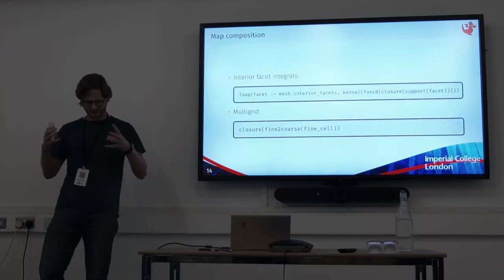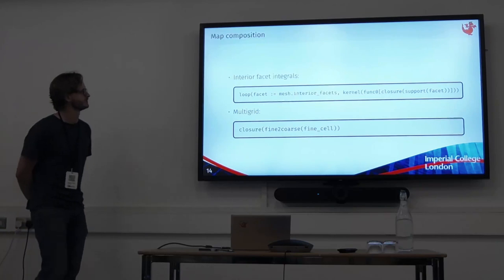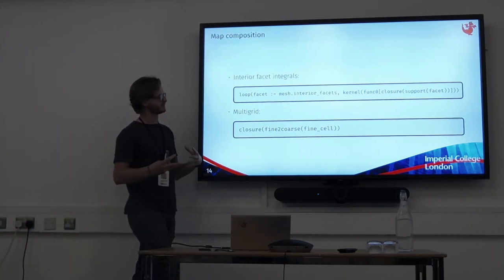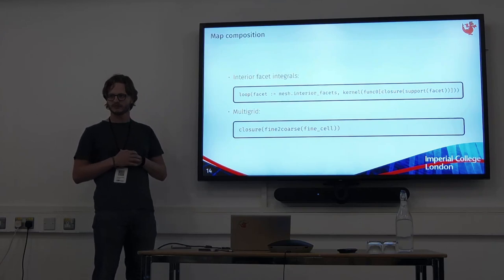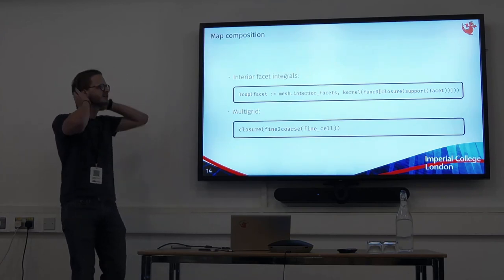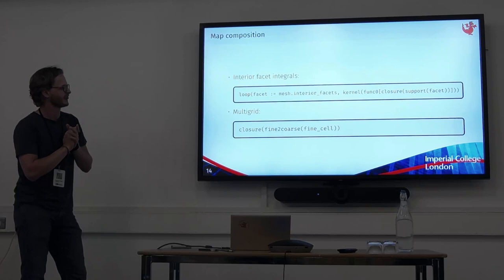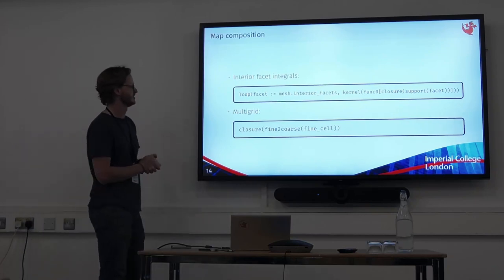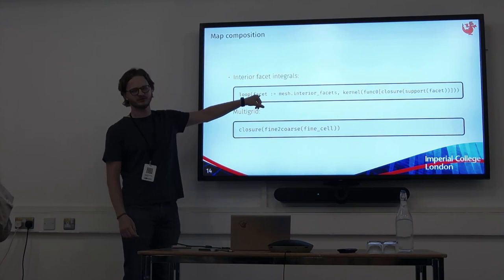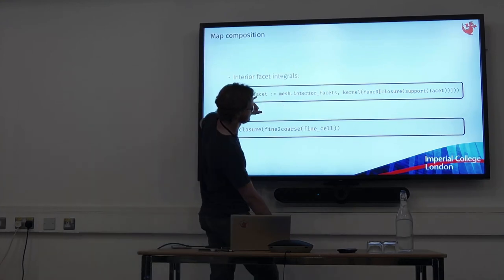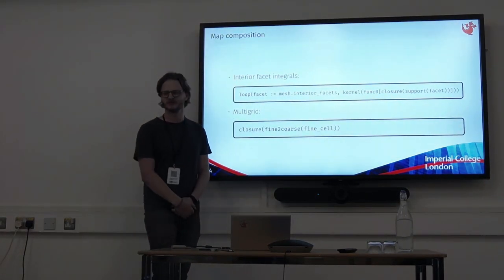I'm now going to talk through composability things that PyOP3 can do. Map composition — imagine we have a facet in our mesh. I'm using the walrus operator here, which is an assignment expression in Python. I want to loop over mesh interior facets, but I also want facet to be a variable I can use later on in the line. It looks nicer than the alternative — it's called the walrus because it's supposed to look like eyes and tusks.